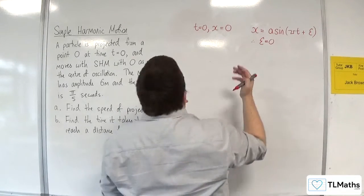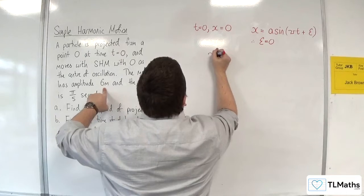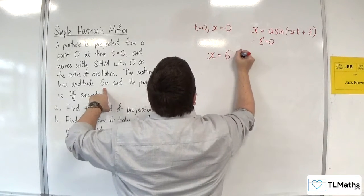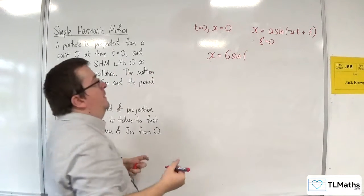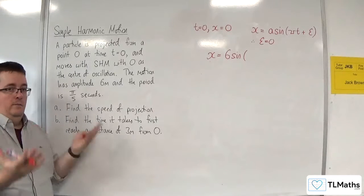And we know that because the amplitude is 6, that we must have x is equal to 6 sine of omega t, and that's it.